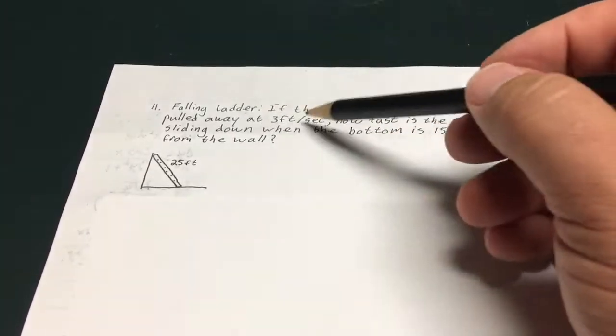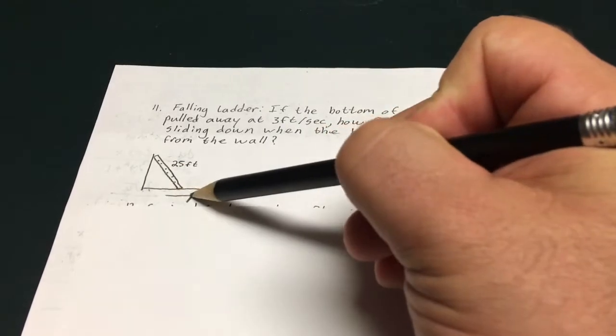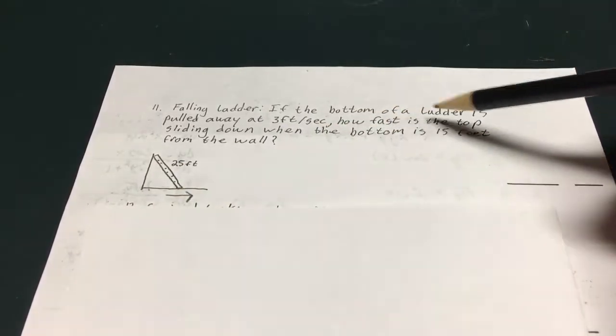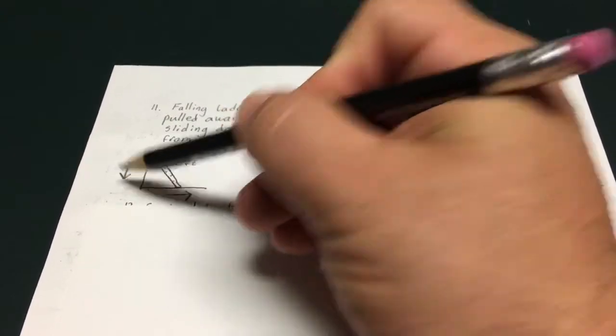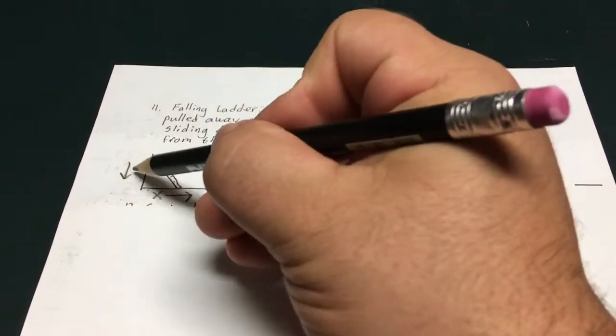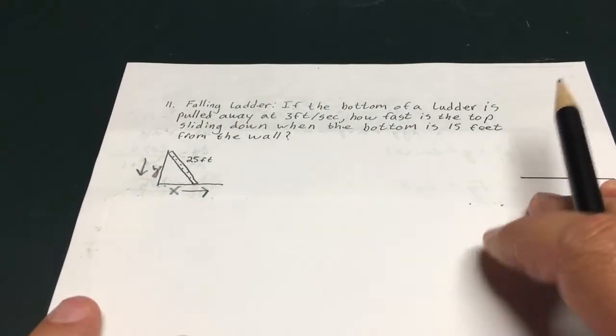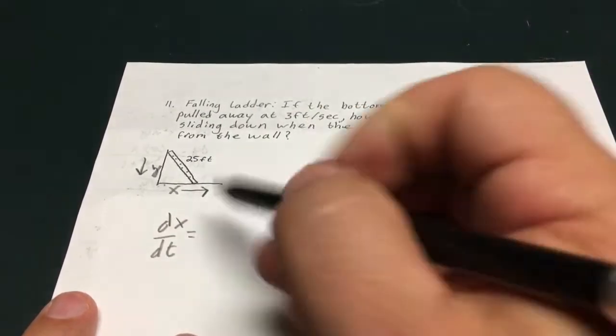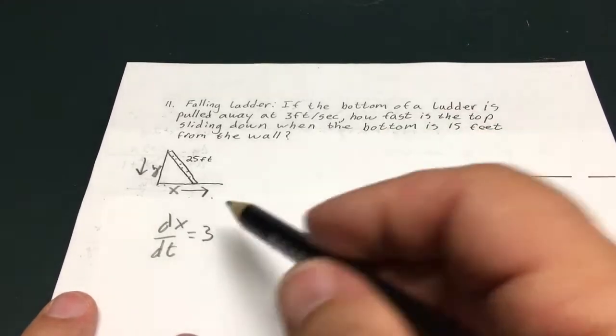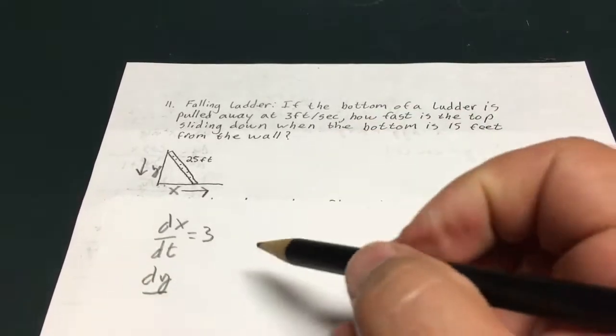A falling ladder. The bottom of the ladder is pulled away at 3 feet per second. So this is going to be going this way at 3 feet per second. How fast is the top sliding down when the bottom is 15 feet from the wall? So they want to know how fast it's going down. So I'm going to label this as my x and this is my y. And they give me a couple of particulars. So they give me dx/dt equals 3 feet. And they want to know what dy/dt is. That's their question.